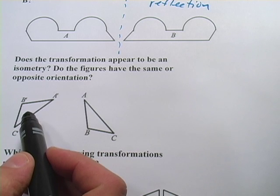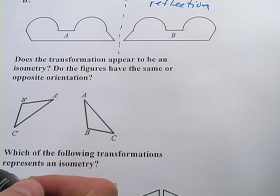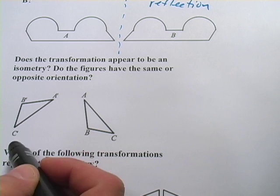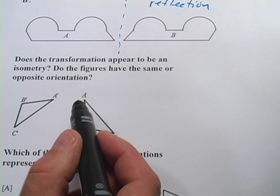So does it appear to be an isometry? So the question is, are these shapes congruent and is there some reflection or rotation or translation that could have made one shape into the other? That's the first part of the question.